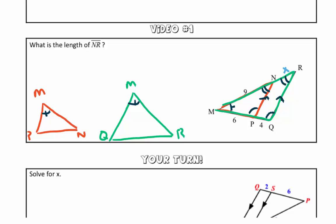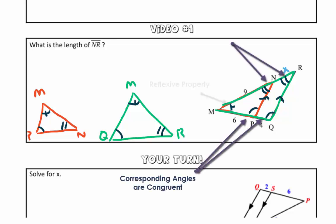So I'm going to go ahead and mark our angles in our diagram based on what we know about parallel lines cut by a transversal, so that we have corresponding angles, and then we have that reflexive property for angle M.